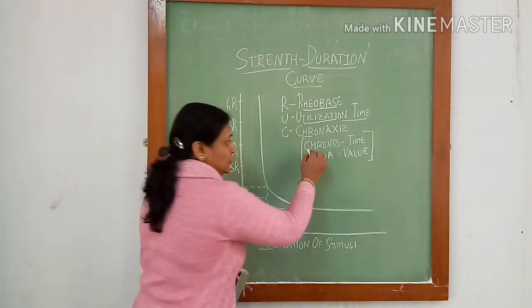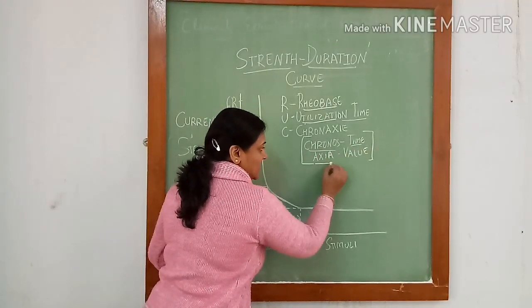Chronaxie is chronos means time and axia means value.